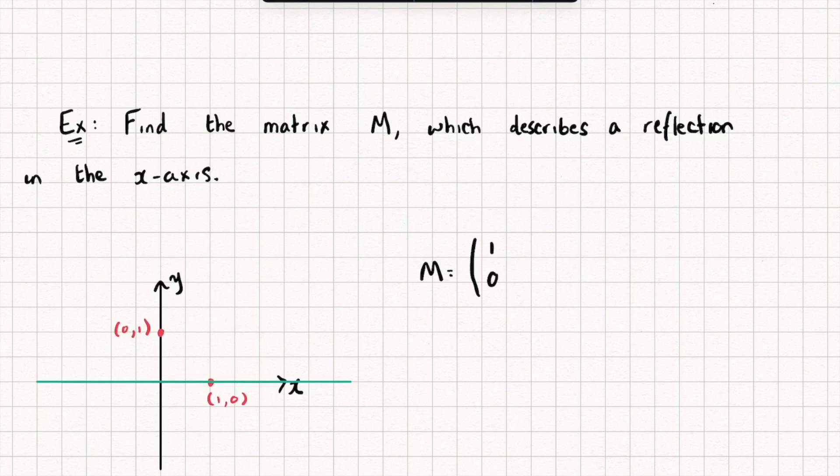Let's look at what happens to the point (0,1). Well that's going to be moved down here isn't it? To the new coordinates (0,-1). And so just like that we found a matrix M which describes a reflection in the x-axis.